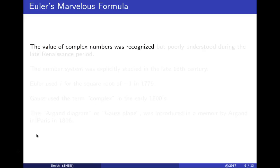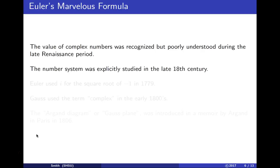The value of complex numbers was recognized but poorly understood during the late Renaissance period in the 1500s in Italy. The number system was explicitly studied in the late 1700s. Euler used i for √(-1) in 1779, and Gauss used the term 'complex' in the early 1800s.